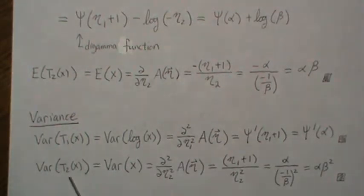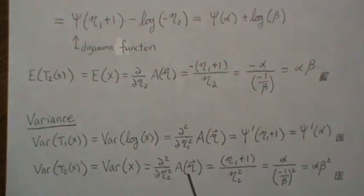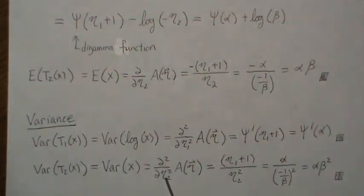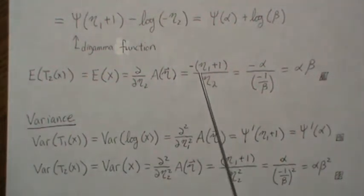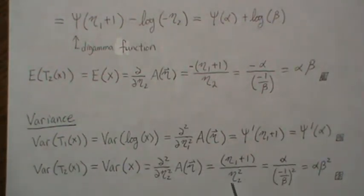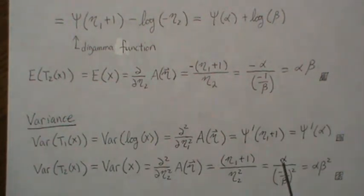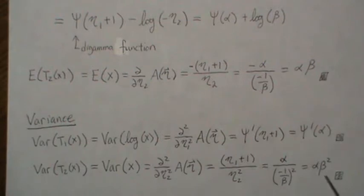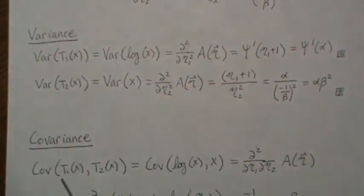The variance of our second sufficient statistic x is the second partial derivative of the log partition with respect to eta-two. We've already taken the first derivative and got negative one over eta-two times the constant eta-one plus one. Taking the derivative again with respect to eta-two gives eta-one plus one over eta-two squared. Plugging in — alpha minus one plus one gives alpha, and eta-two squared is one over beta squared — inverting and multiplying gives alpha times beta squared, which is the known variance of a gamma distribution.